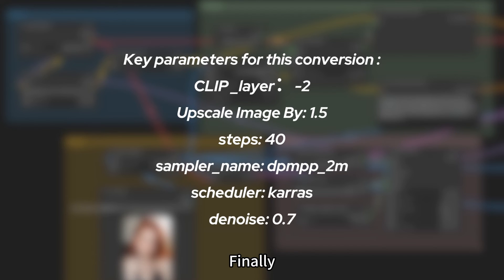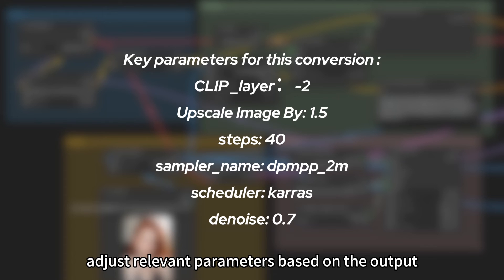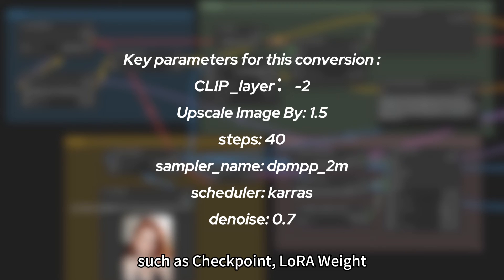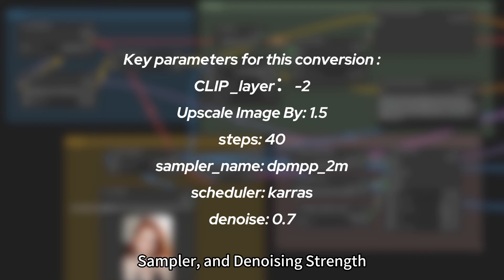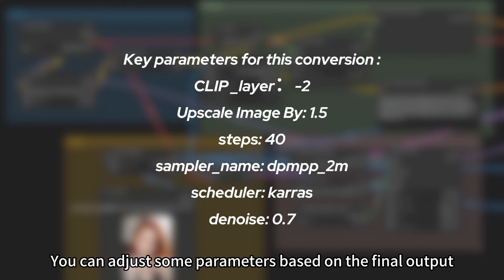Finally, adjust relevant parameters based on the output, such as checkpoint, LoRa weight, prompts, sampler, and denoising strength. These are just references — you can adjust some parameters based on the final output.